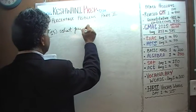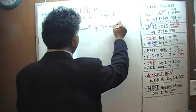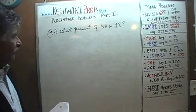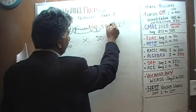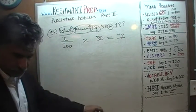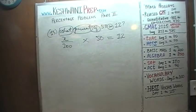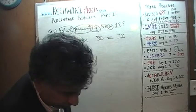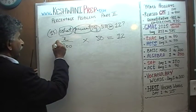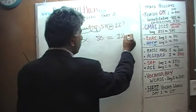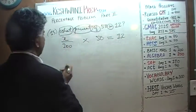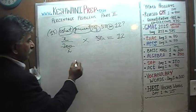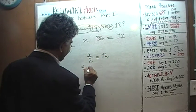Number 15: What percent of 50 is 12? x over 100, times 50, equals 12. Before multiplying by 100, we have 100 and 50 — divide top and bottom by 50, giving x over 2 equals 12, which implies x equals 24.